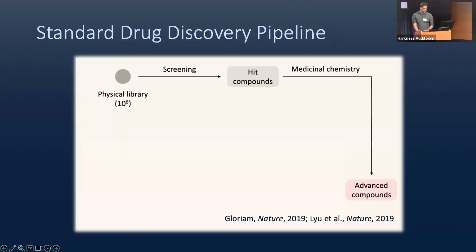What people generally do, especially in the pharmaceutical industry, is you hire a team of chemists, have them build lots of compounds, and construct libraries that are quite large — a library of a million compounds. You then screen these compounds against whatever target or disease you care about and come up with molecules considered hits — molecules showing some promise towards curing the symptoms of the disease. You can then engage your medicinal chemistry team to develop these compounds further into advanced compounds to take through clinical trials.